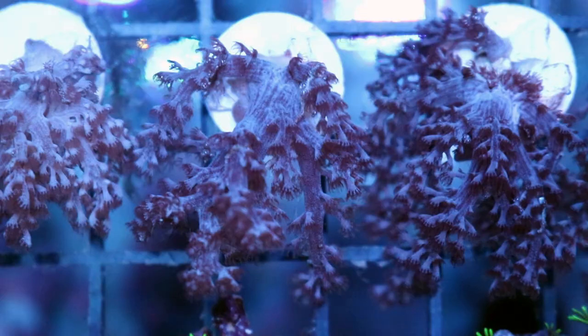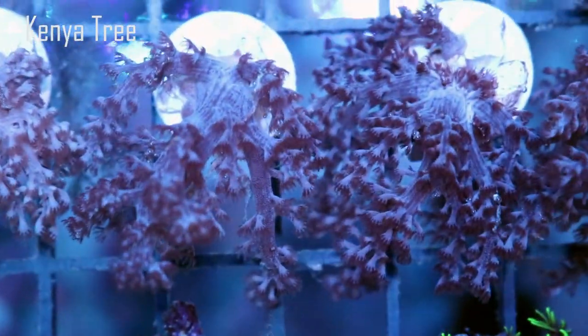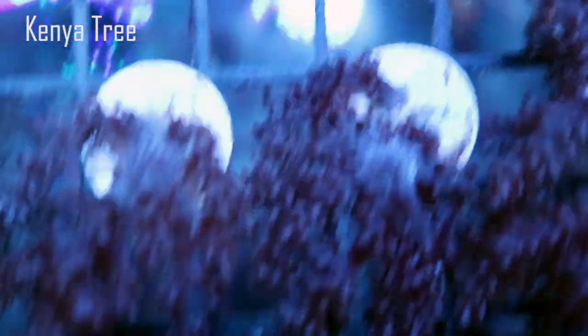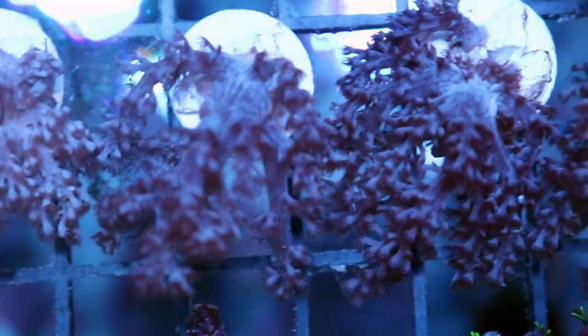And there's some more Zoanthids or Palithoas. Let me see what else we've got in the tank here. Kenya tree. Here's another really easy one. So it's got a cool kind of purpley blue hue to it. Really easy to keep. And that is a soft coral and it's a leather coral. So they grow really fast. They're easy to frag. So if they start to get out of control, you can literally take a pair of scissors and chop branches off of it and glue them and mount them to frag plugs. It's a really easy coral to keep. That's Kenya tree.